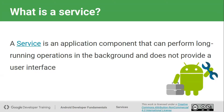Let's understand what is a service in Android. A service is an application component that can perform long-running operations in the background and does not provide a user interface. That means a service does not have any user interface, just like an activity having a screen. We need services when we want to perform a background task that will take a long amount of time — more than five seconds.